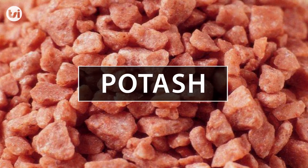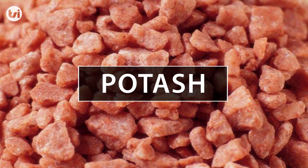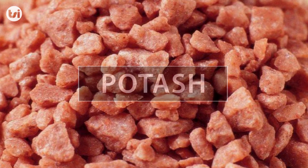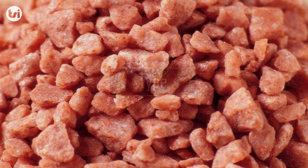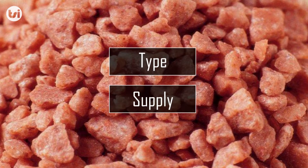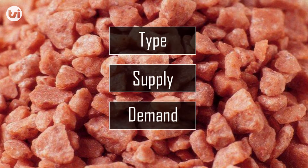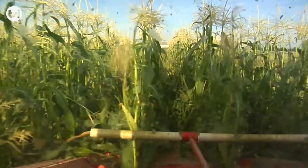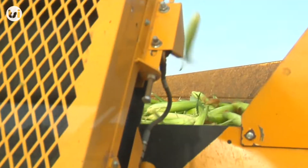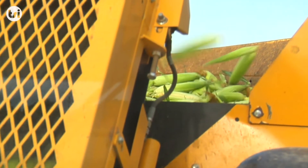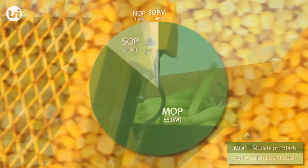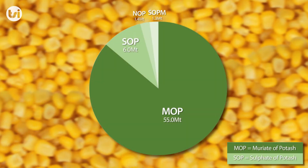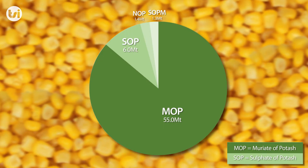Through this analysis we review the fundamentals for potash including the types, supply and demand factors as well as pricing. There are several types of potash, however the two most common are muriate of potash or sulphate of potash, more simply referred to as MOP or SOP.